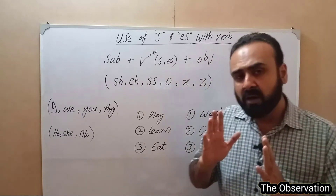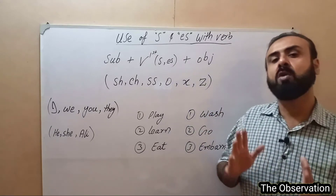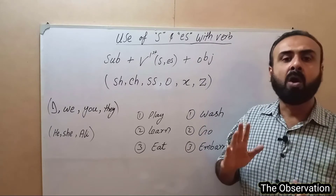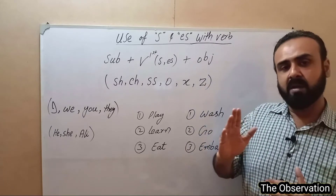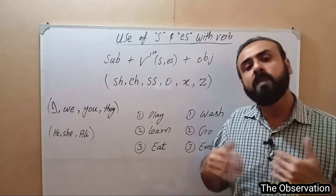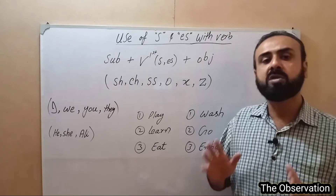When you have a third person singular subject, and there is a verb, the rule is: look at the ending of the verb. Certain verb endings will take ES, while all others will take only S.